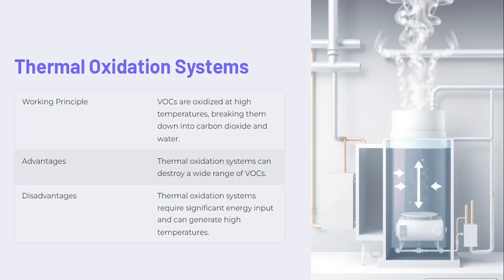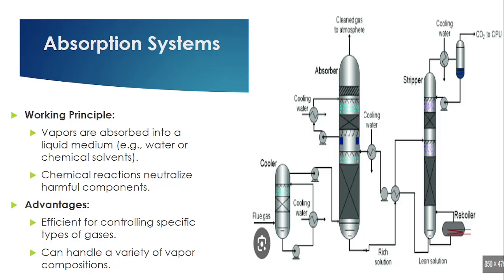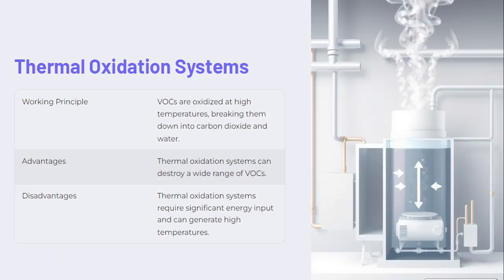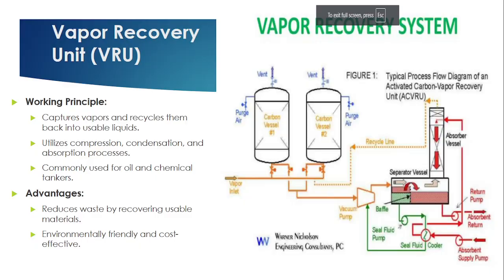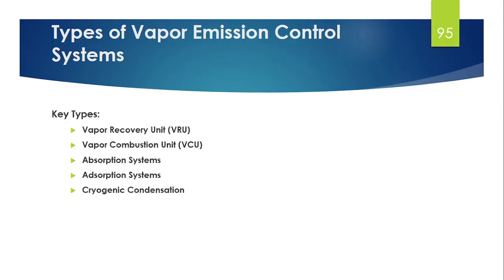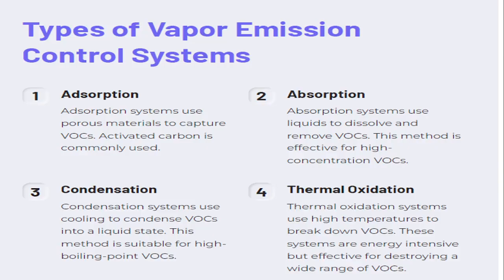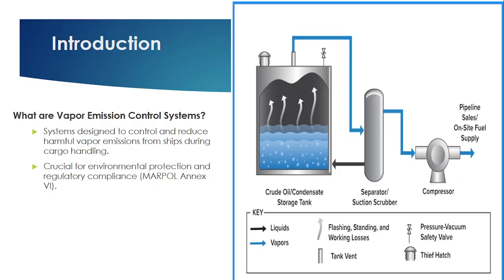After watching the video you will have a clear knowledge of a vapor emission control system and its different types. This is Part 2 of the vapor emission control system series. In Part 1, I explained about Regulation 15 — what is Regulation 15, what is an organic compound, and why and where it is used. You can find the link in the description.